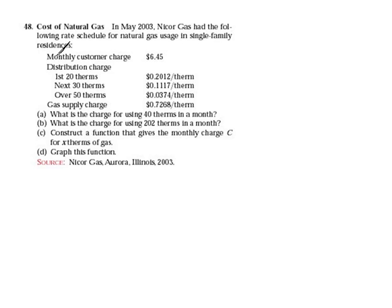Looking at what we have here, we have a monthly customer charge. This is what everybody has to pay no matter what — whether you use it or don't in a month, it doesn't matter. Everybody pays the $6.45. Then we have another portion where we pay depending on how much we use, so the more you use, the cheaper it is. We also have this gas supply charge, which represents the money they charge us to deliver it to us. It's not the gas we're using — it's their delivery charge.